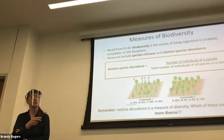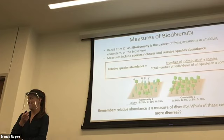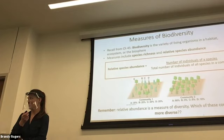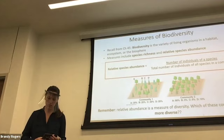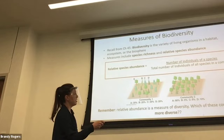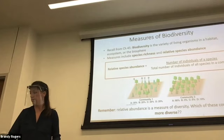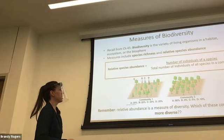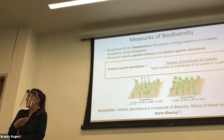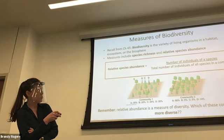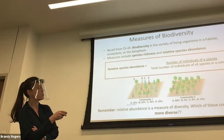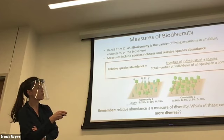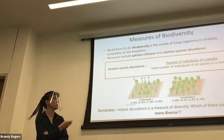The two measures we're comparing are species richness and relative species abundance. Species richness is the simpler measure — you just find out what species are there and count the number of species. When you go into relative abundance, you want to find out how much of your community is made up of each species. To calculate relative abundance, you take the number of individuals of one species over the total number of individuals of all species in the community. It's just a fraction — very straightforward.